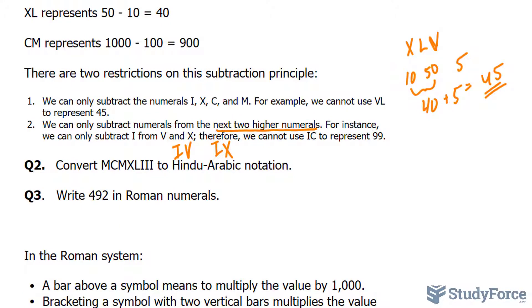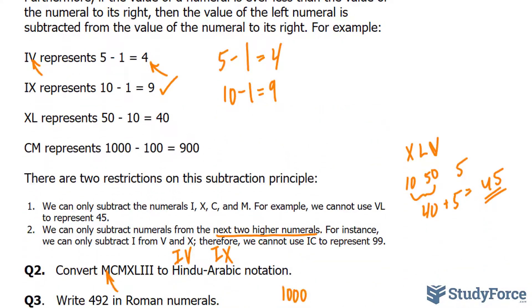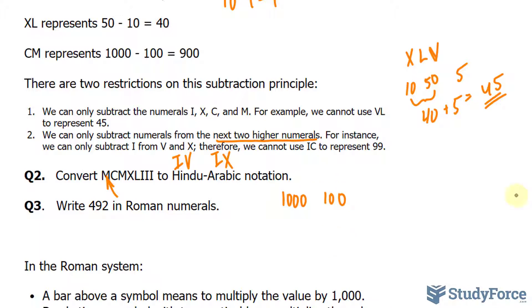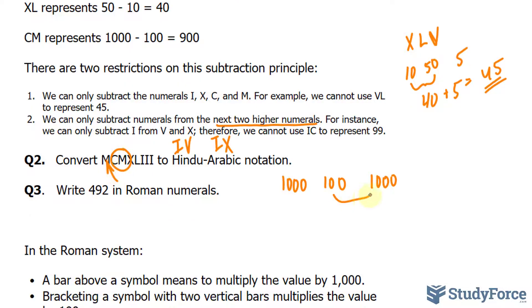Let's do another question. Convert MCMXLIII to Hindu-Arabic notation. Let's begin with this M. M is 1,000. So we have 1,000. C is 100. M again is 1,000. Notice that we go from small to large. This could be a candidate for subtraction. And it works. We will take away these two. So 1,000 minus 100 is 900. This stays the way it is.